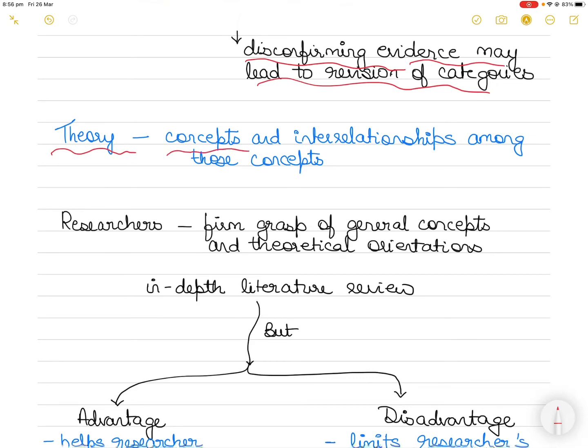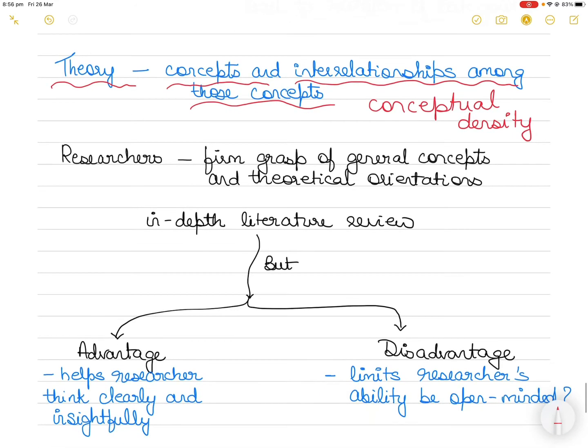The theory that evolves or the theory that ultimately evolves will identify or include numerous concepts and interrelationships among those concepts. In other words, it has something that we call conceptual density, very strong in theory and concepts. Now virtually all experts agree that grounded theory researchers should have a firm grasp of general concepts and theoretical orientations in their discipline as a whole.